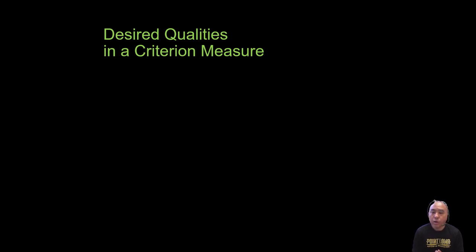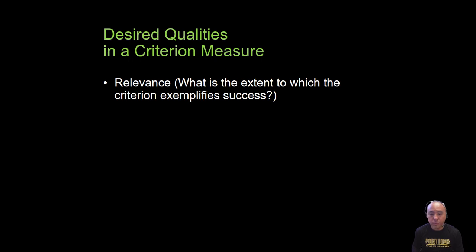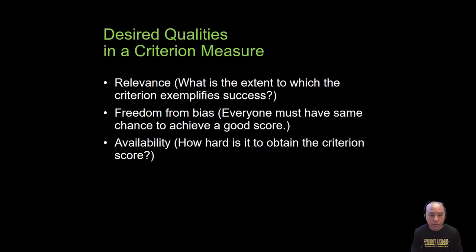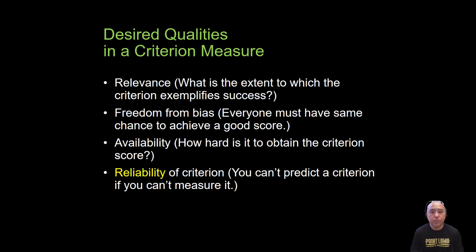What are the desired qualities for a criterion measure, or gold standard, when validating field tests? First, it has to be relevant — for example, VO2 max for aerobic capacity, DEXA or underwater weighing for body composition, or force platforms for ground reaction force. It also has to be free from bias, readily available in the lab or field, and most of all, it has to be reliable. You can't validate a criterion measure if you can't measure it consistently.